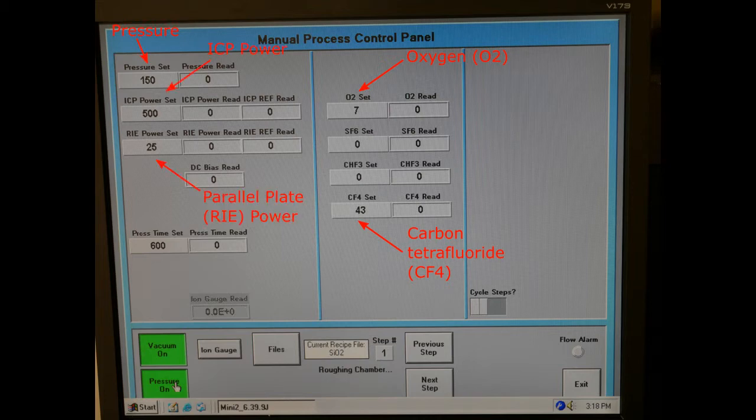You may recall from the deposition video that in PE-CVD we used a pressure of 1000 millitorr. Here, we used significantly lower pressures as we wished to remove materials instead of deposit them. You may also notice that there are two power sources in the recipe, ICP and RIE.